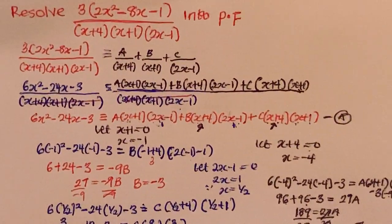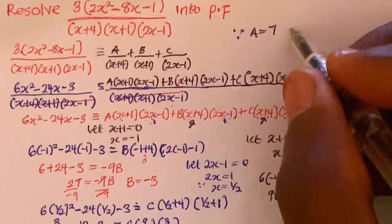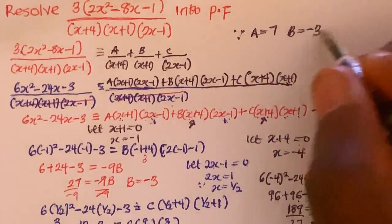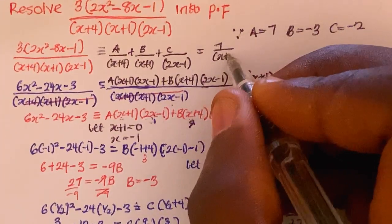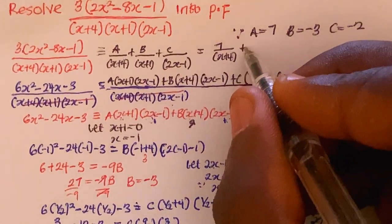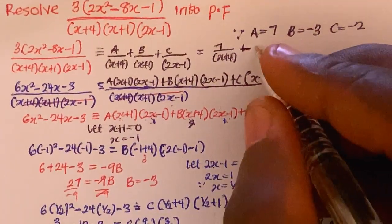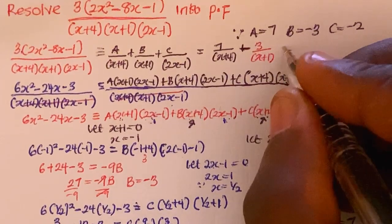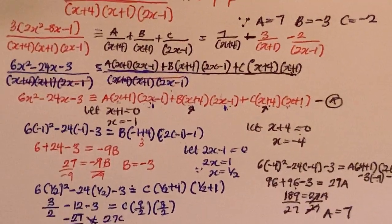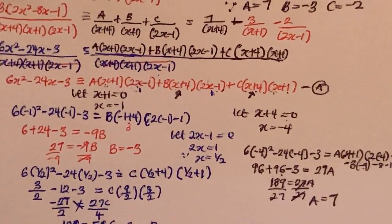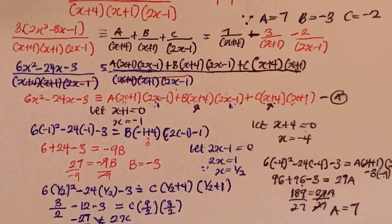Therefore: A = 7, B = -3, C = -2. So the partial fraction expression is: 7/(x+4) minus 3/(x+1) minus 2/(2x-1). If you enjoyed this video, please like and share it with your friends, and don't forget to click the subscribe button. Thanks for watching.